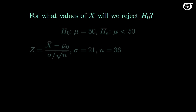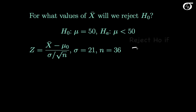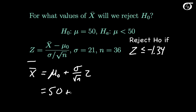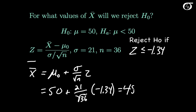Now we'll re-express the rejection region in terms of the sample mean, because that will help with our power calculations later on. We reject the null hypothesis if the observed value of z is less than or equal to minus 1.34. Isolating x-bar by multiplying by sigma over the square root of n and adding mu-zero, we get x-bar equals mu-zero plus sigma over the square root of n times z. In this case, that's 50 plus 21 over the square root of 36 times minus 1.34, which works out to 45.31.